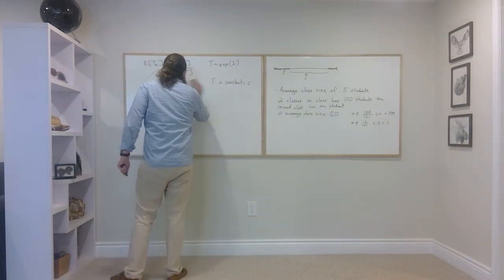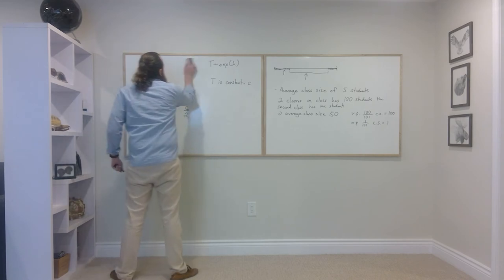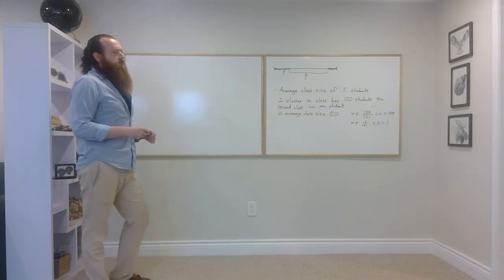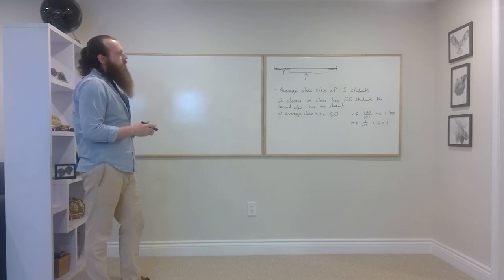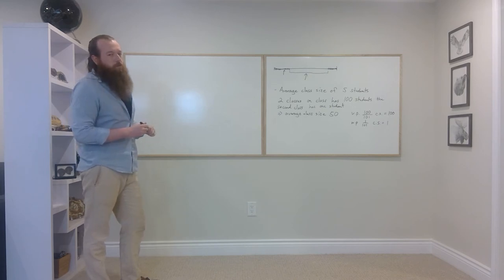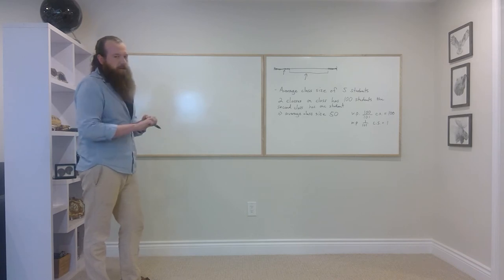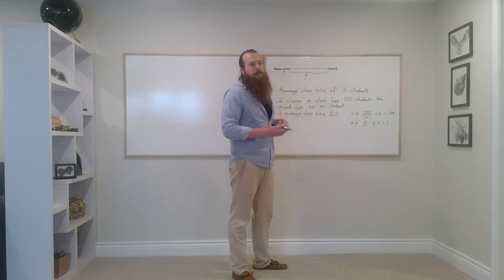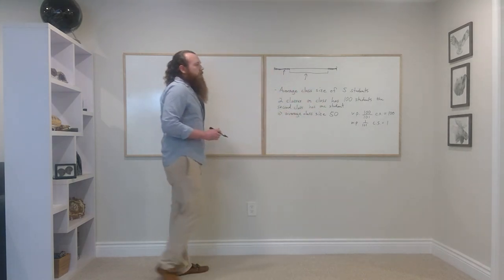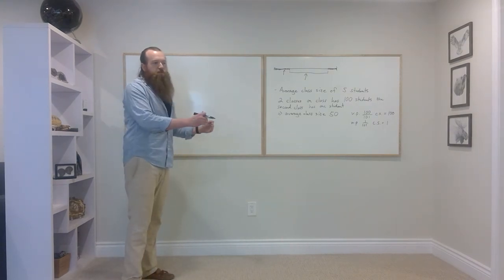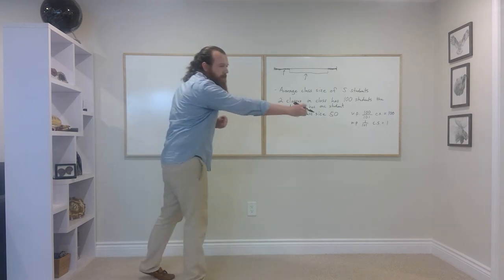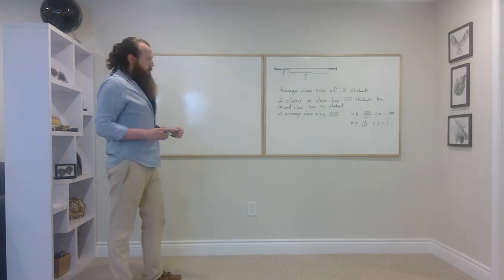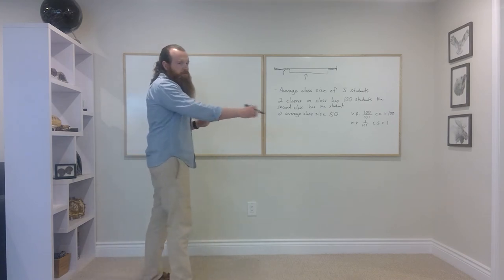I can calculate the expected remaining time — the expected excess — but I might want more fine-grained information. Instead of just asking what's the expected remaining processing time on average, I might want to know: if a job has been processed for t seconds specifically, what's the expected remaining processing time now? In other words, if it's been processed for t seconds, what's its new processing rate?